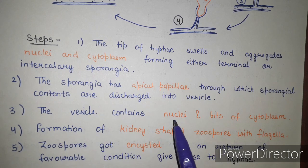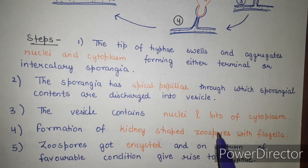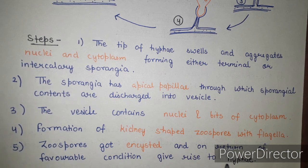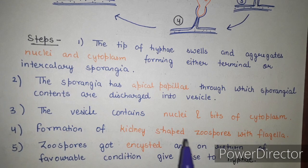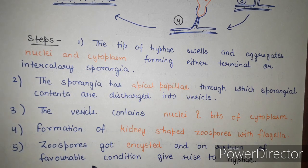The vesicle contains the nuclei and bits of cytoplasm. Then there is formation of kidney-shaped zoospores with flagella. The zoospores become encysted, and on return of favorable conditions they germinate to give rise to new hyphae. These are the basic steps of asexual reproduction in Pythium.